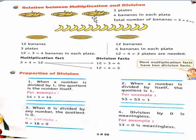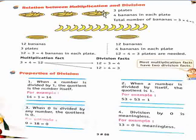Here in these plates, how many plates are there? 3. And 4 bananas in each plate. Total number of bananas equal to 3 multiply 4. So 12 is our answer.